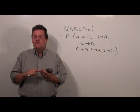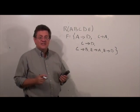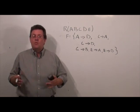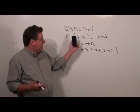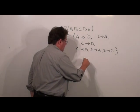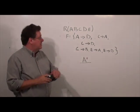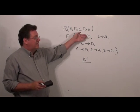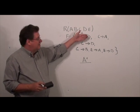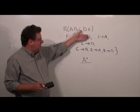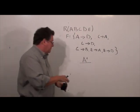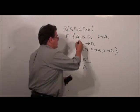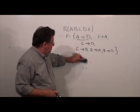The third step is to see whether we have any redundant functional dependencies. We take each functional dependency one at a time and figure out whether we need it. We take A determines D and compute A closure pretending that functional dependency doesn't exist. If A closure contains D, we don't need it. But A closure without that FD only has A — there's no way to get to D — so we need to keep this functional dependency, and it will be in our final solution.